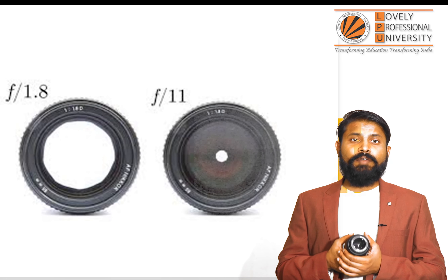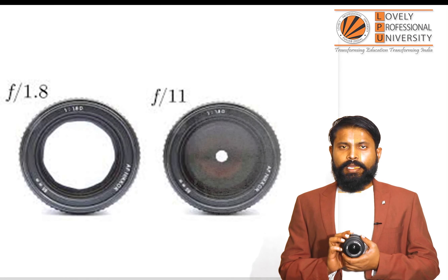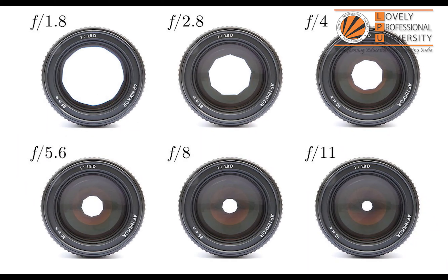Now, what is f-stop? A bigger ring means a smaller f-stop, and a smaller ring means a bigger f-stop. The maximum aperture will be when we have a bigger ring, giving us f-stop 2, and when we have a smaller ring, there will be f-stop 16. We will discuss the combination of how to use it for capturing beautiful images.